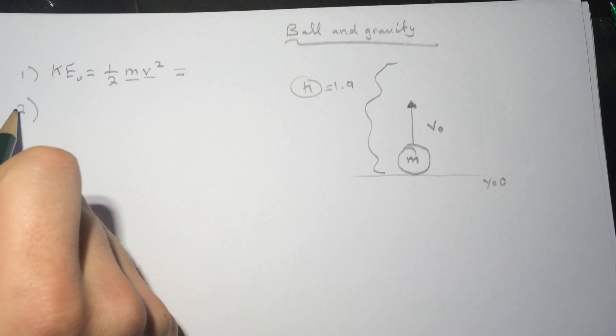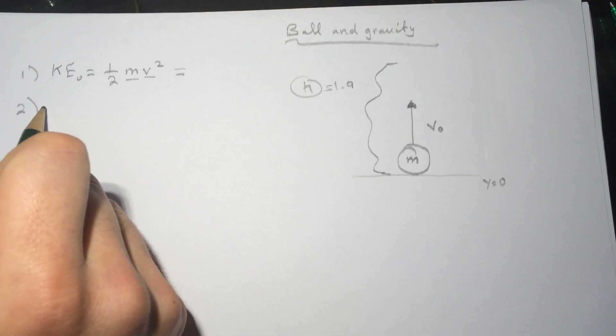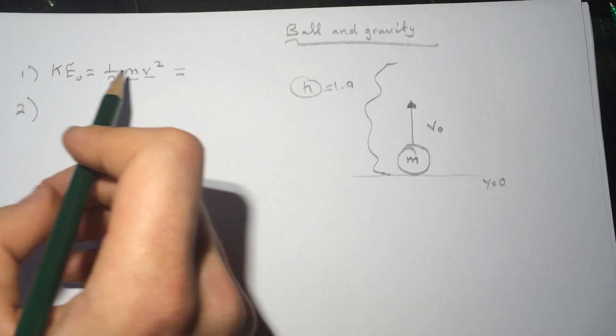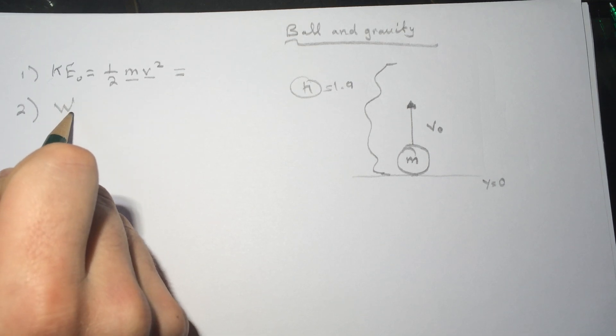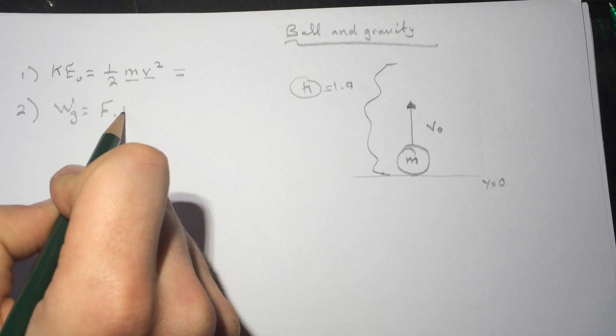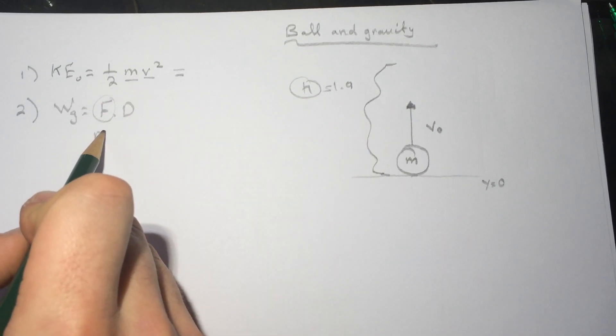it height h because we're talking conceptually now. How much work is done by the gravitational force? If we say that the work by gravity is force times distance, what's the force here? It's mg, so